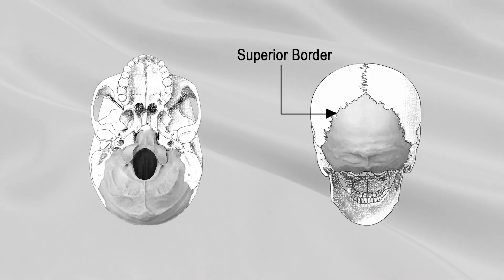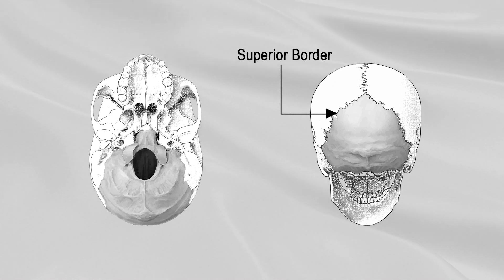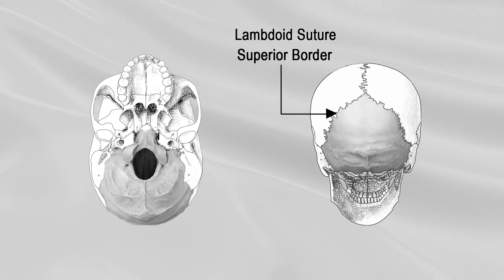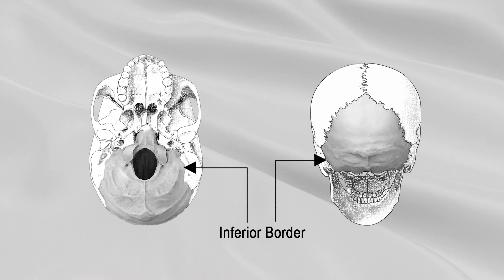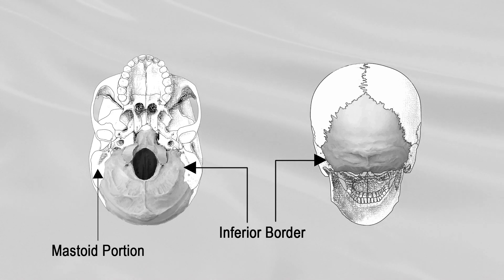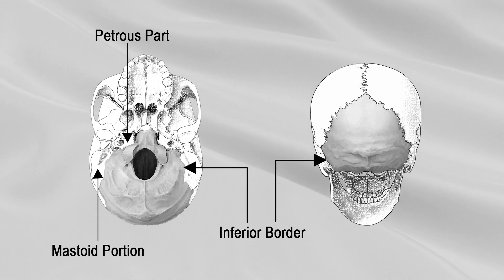The superior borders extend from the superior to the lateral angles, and articulate with the parietal bones to form the lambdoid suture. The inferior borders extend from the lateral angles to the inferior angle. Their upper halves articulate with the mastoid portion of the temporal, and the lower half with the petrous part of the temporal bone.